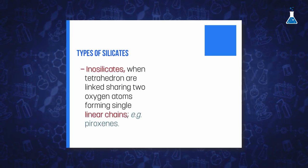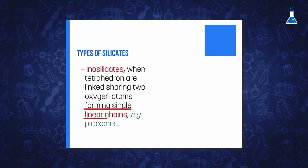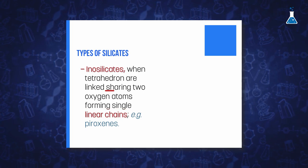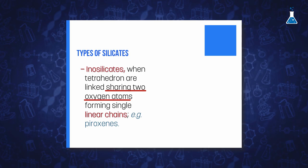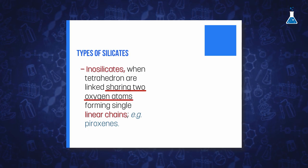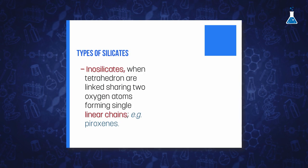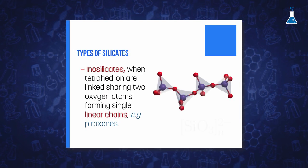In other cases, it is also possible that tetrahedra are linked forming single linear chains, and therefore each tetrahedron will share two oxygen atoms, as happens in the case of cyclosilicates. This family of silicates are known as inosilicates single chains, and this structure is the basis of a group of minerals called pyroxenes.